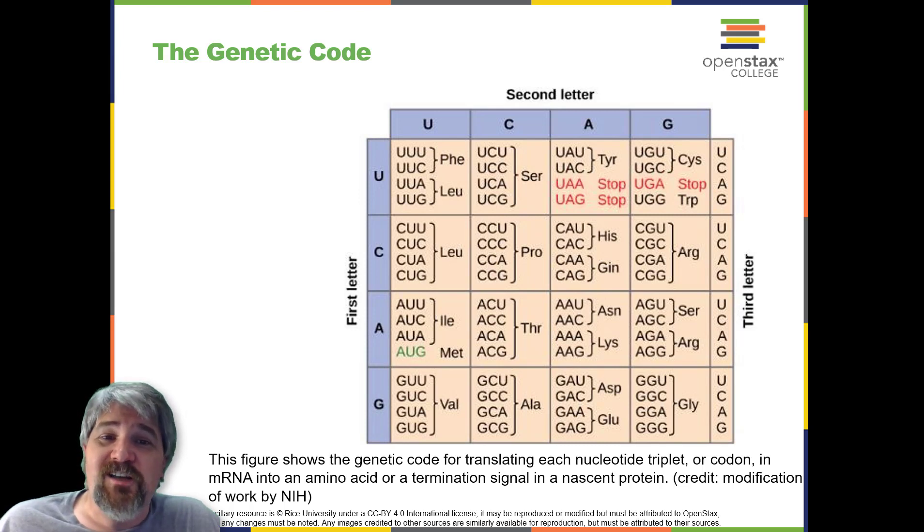Another codon, AUG, also has a special function. In addition to specifying the amino acid methionine, it also serves as the start codon to initiate translation.